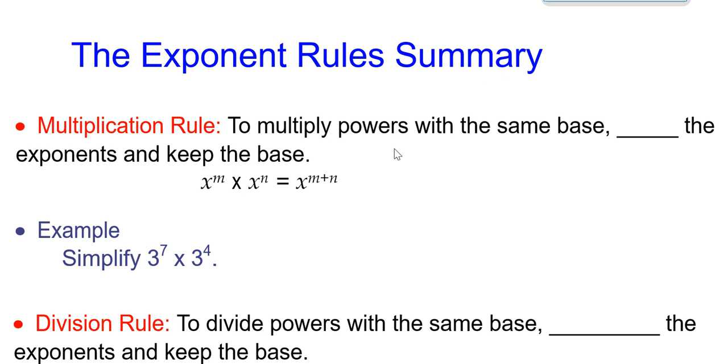In this video we're going to summarize the exponent rules that we learned about in our investigation. The first rule was the multiplication rule, which states that when we multiply powers with the same base—and that's very important, the bases have to be the same—we add the exponents and keep the base. For example, 3^7 × 3^4 becomes 3^11 because 7 + 4 is 11.